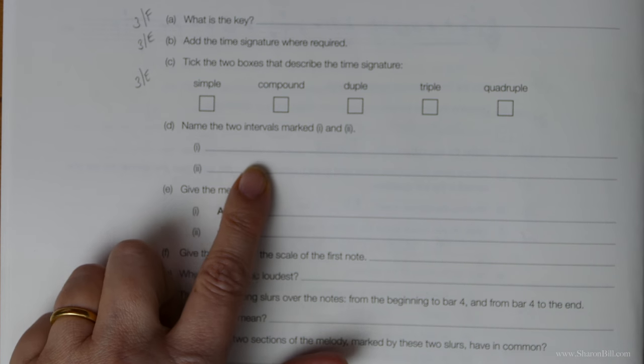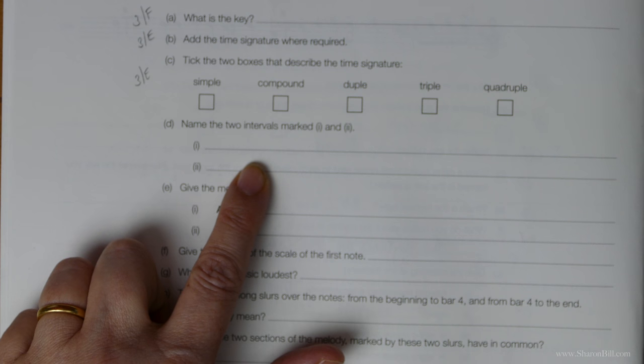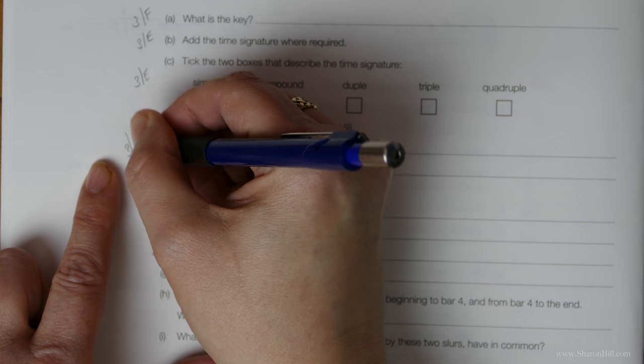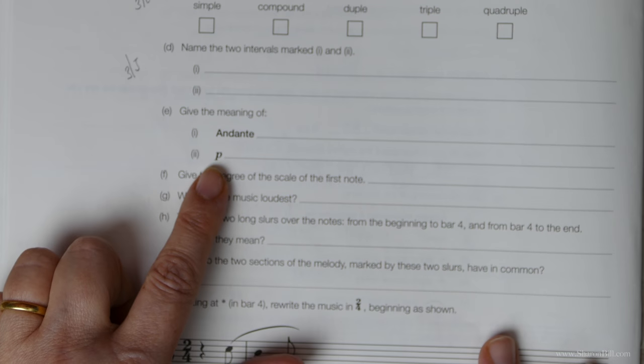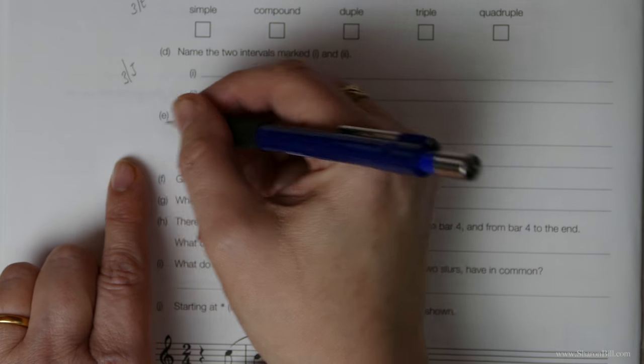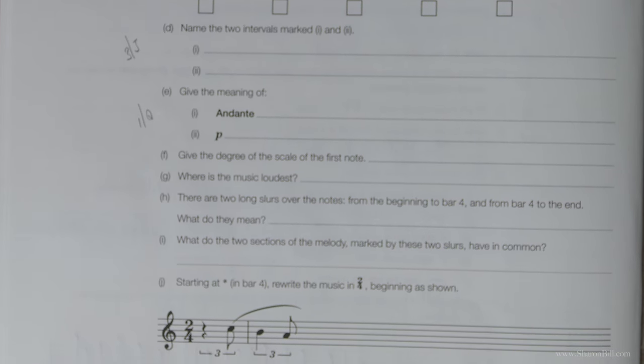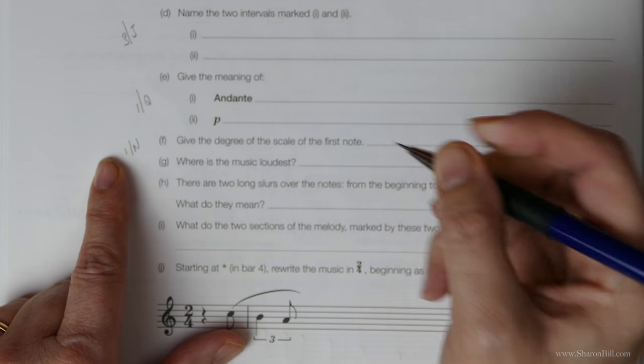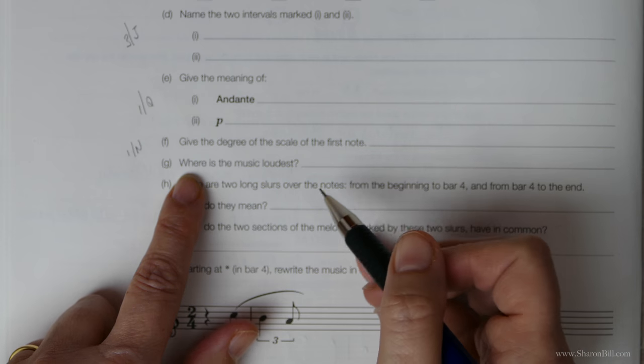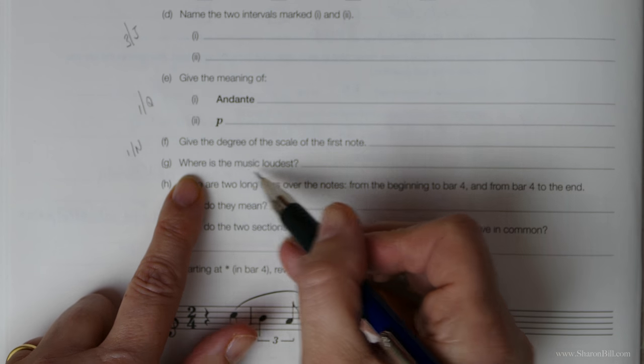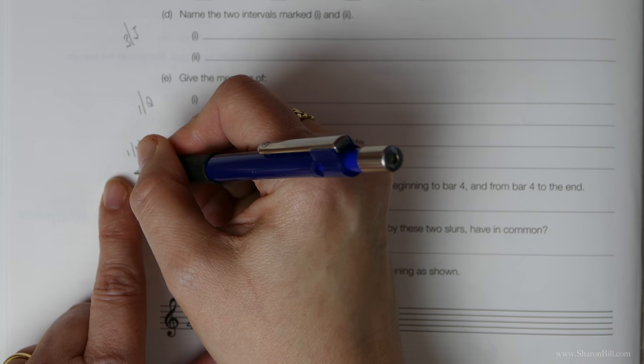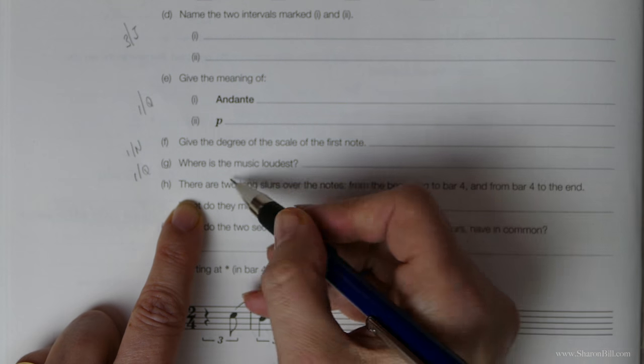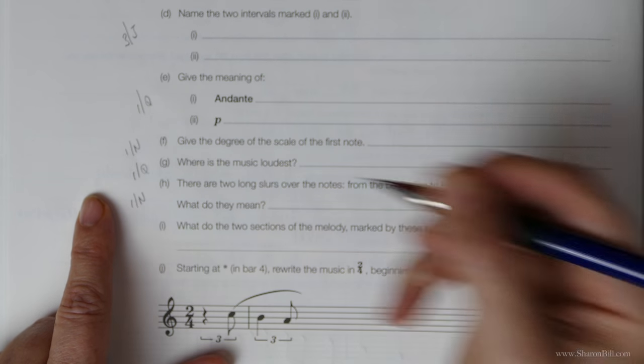The intervals that are asked for you to describe you'll find in grade 3 section J. These you will find in grades 1 section Q, your performance directions. The degree of the scale is first explained in grade 1 section N but then you need to reapply that knowledge to this later information. Where is the music loudest, you'll find those performance terms which will show you that in grade 1 section Q.